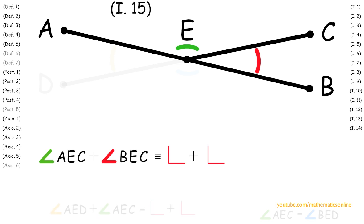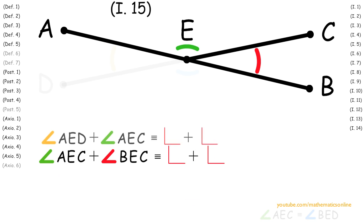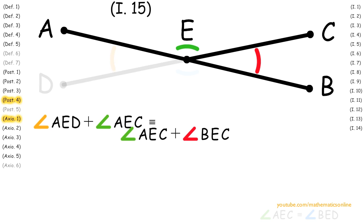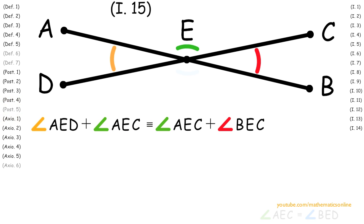Since we also have that angle AED plus angle AEC are congruent to the sum of two right angles, then by Axiom 1 and Postulate 4, we have angle AED plus angle AEC is congruent to angle AEC plus angle BEC.